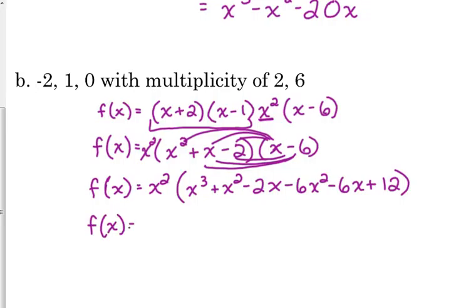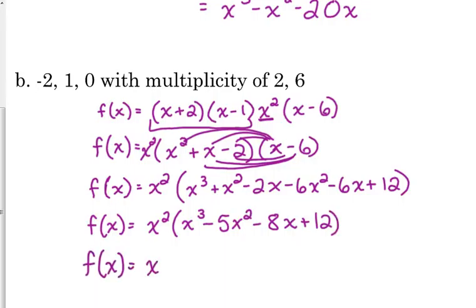I want to combine like terms before I distribute that x squared, because why distribute more than I actually need to. So my final polynomial is going to look like this: x to the 5th minus 5x to the 4th minus 8x cubed plus 12x squared. And I should do a quick little check. If this is degree 5, I should have 5 zeros. I've got 1, 2, multiplicity of 2 so that's 4, and 6 makes 5.